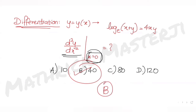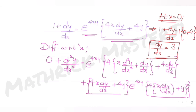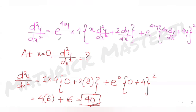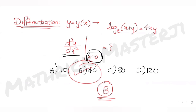So the answer is 40, and option B matches. B is the correct answer for this question. We first converted the logarithmic implicit function to exponential form, differentiated twice to get d²y/dx², then substituted x = 0 to get the value 40.